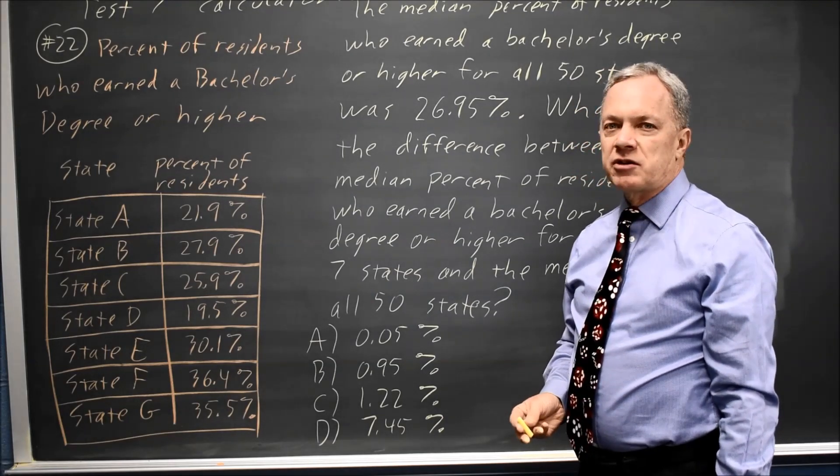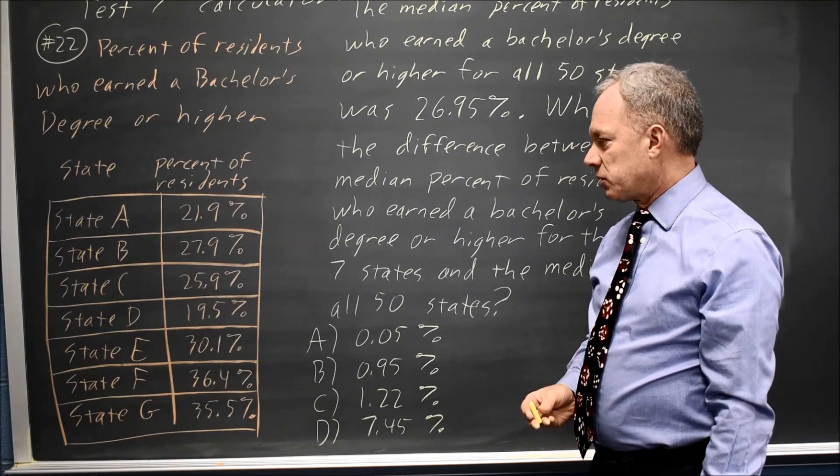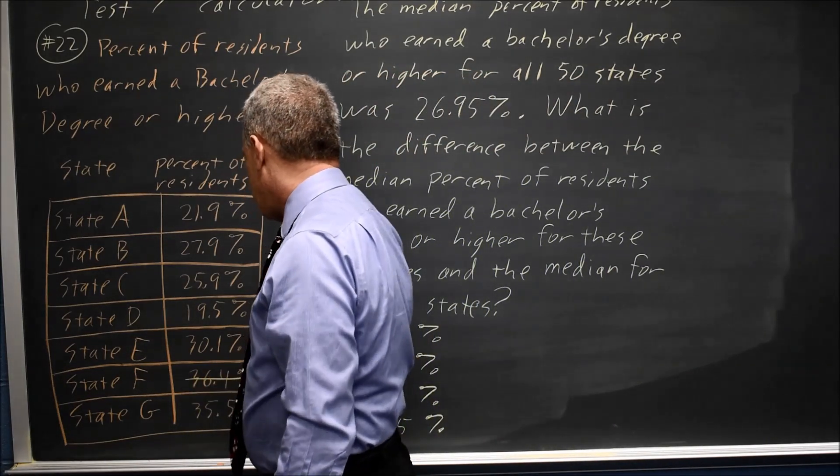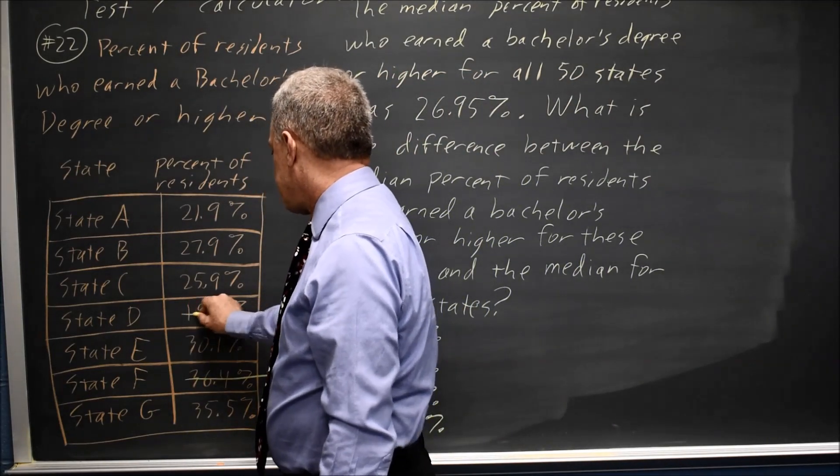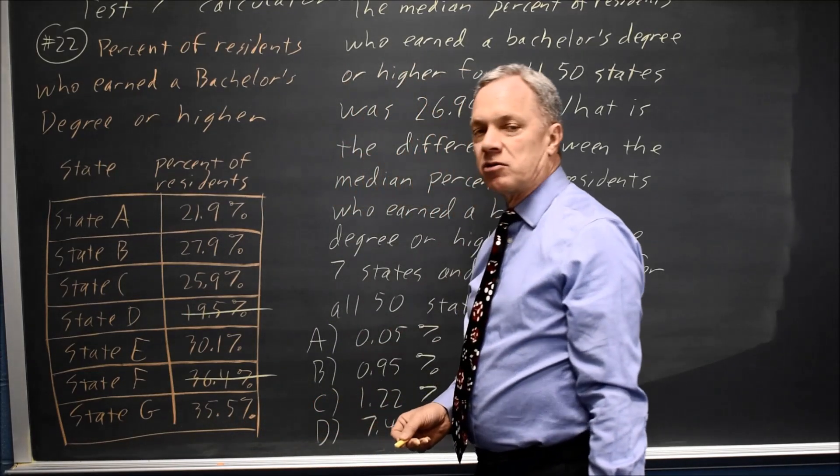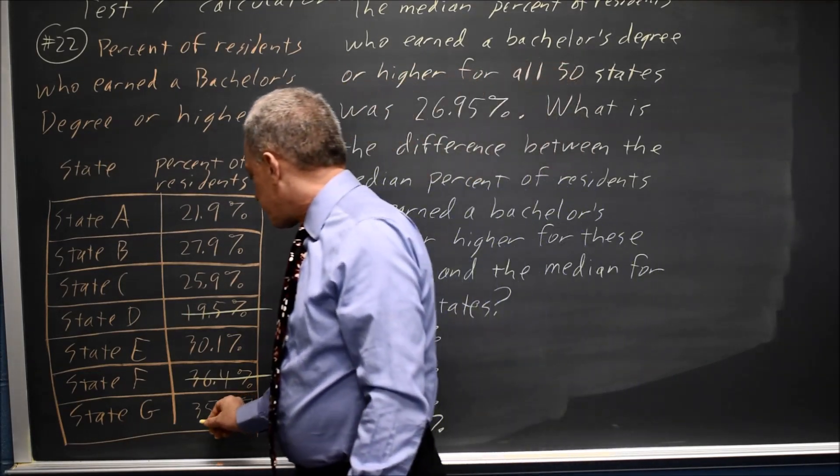To find the median of a list of numbers, we find the middle number. We choose a very high value like 36.4 and a very low value like 19.5 and cross them out. It might be easier to write them out in order, but with only 7, I'm going to try this approach.